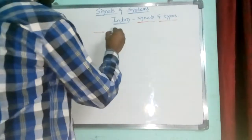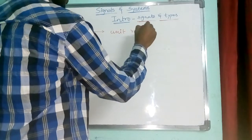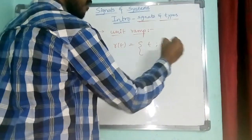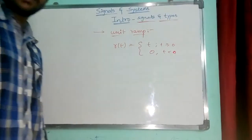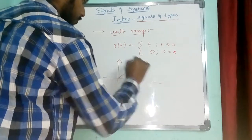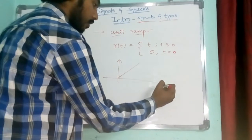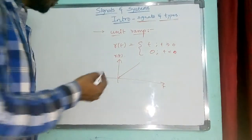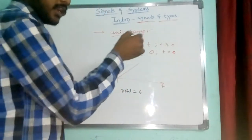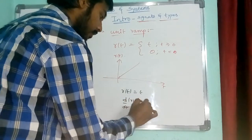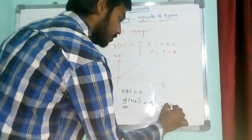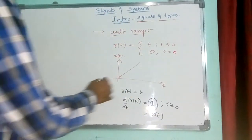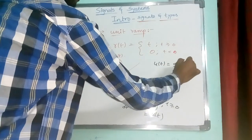Next is the unit ramp signal. The ramp r(t) = t for t ≥ 0, and 0 for t < 0. If I differentiate r(t) with respect to t, I get 1 for t > 0, which is u(t). So u(t) is the differentiation of the ramp signal.